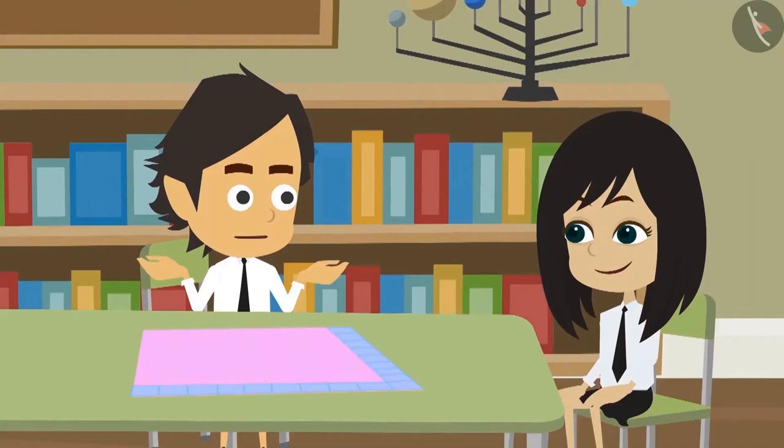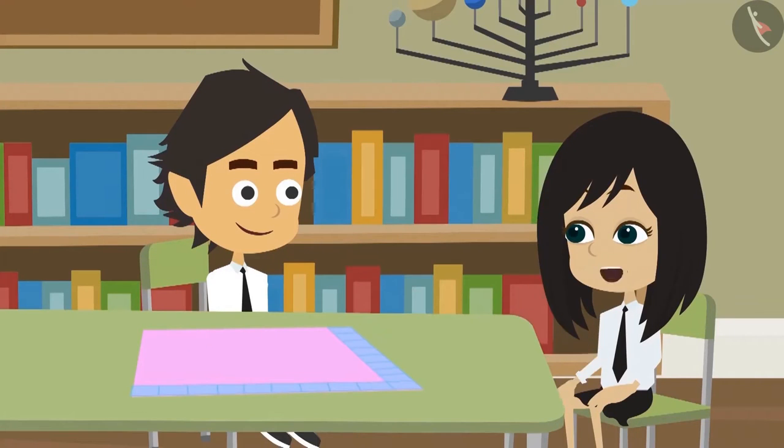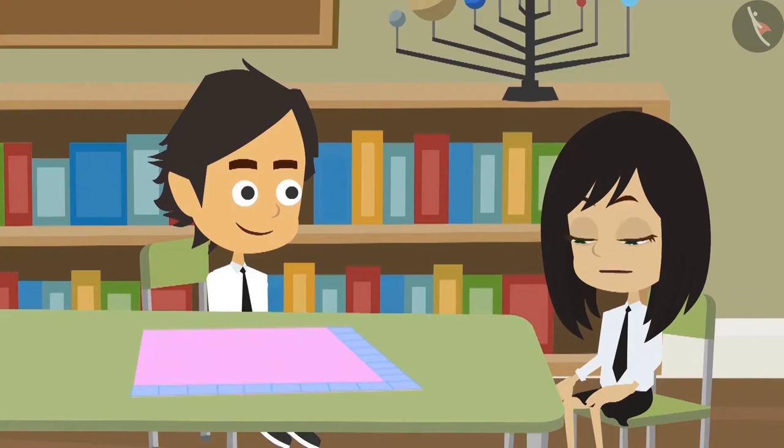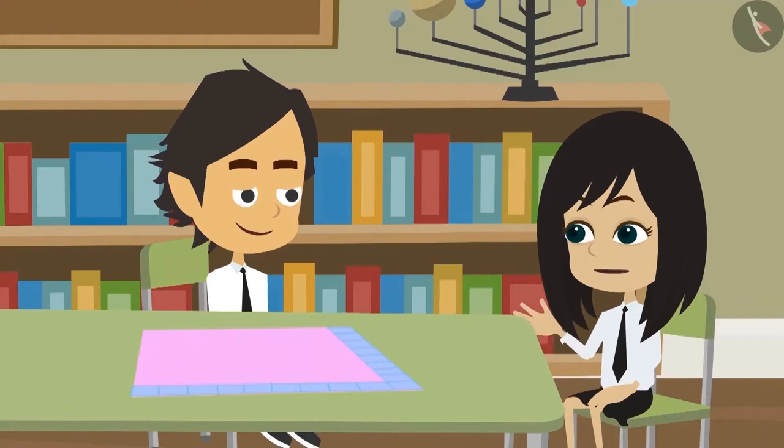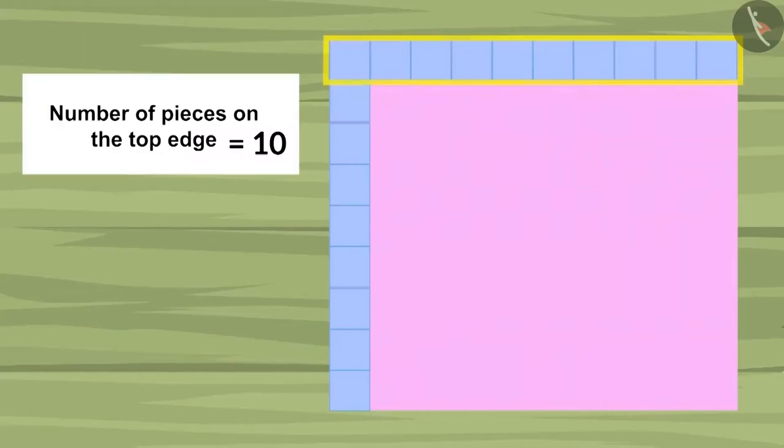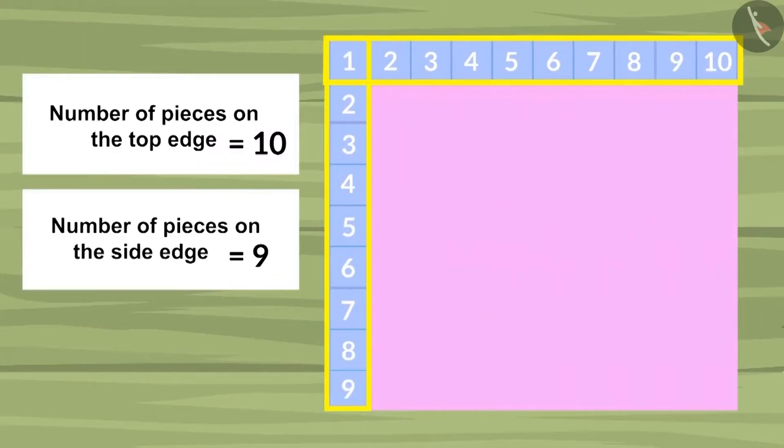What difference does it make? It will make a difference. Now let's multiply the number of pieces placed on top by the number of pieces placed on the side. Ten pieces are placed on the top and nine pieces are placed on the side. And multiplying these numbers will give us result ninety. Look, it made a difference.